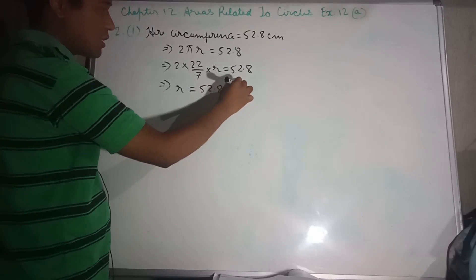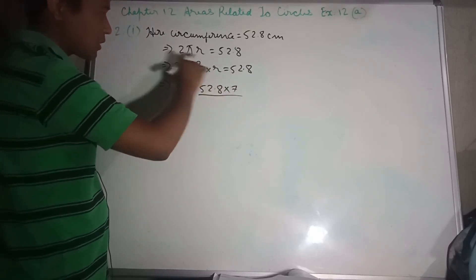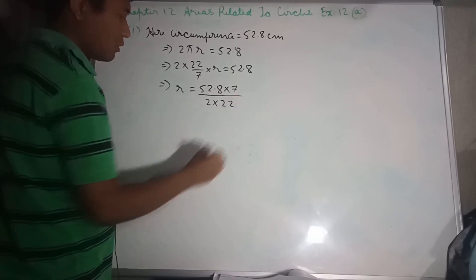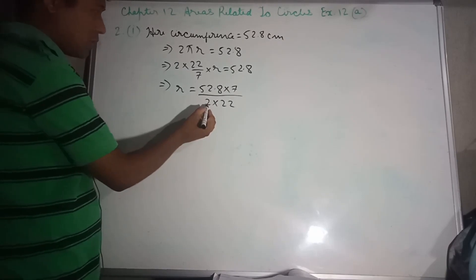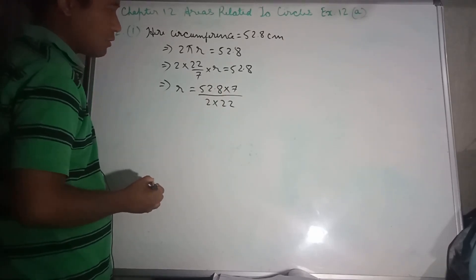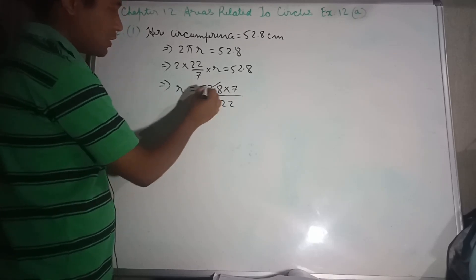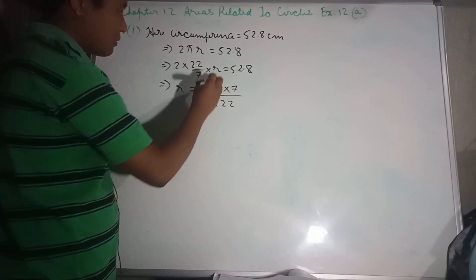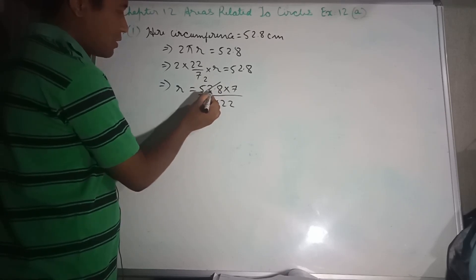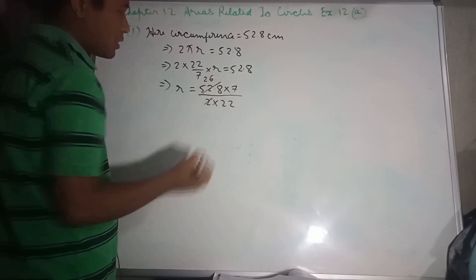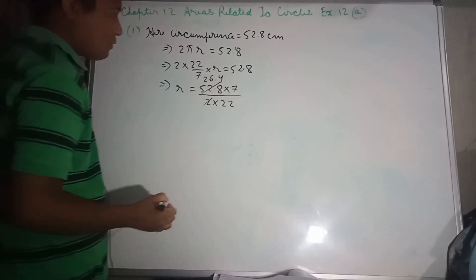R is divided by 2 × 22/7. So R equals 52.8 divided by 2 × 22. Now: 2 into 52.8. Cancel — divide. 2 is 52.8. 2 is 4. 5 minus 4 is 1. 2 is 12. 2 is 12. 2 is 4, giving 8. Result: 26.4.